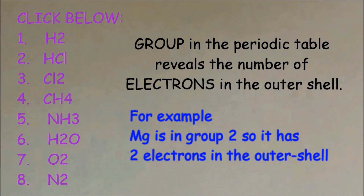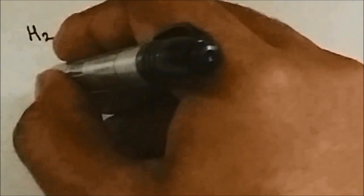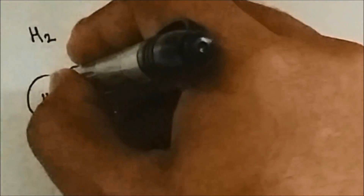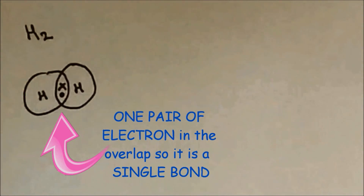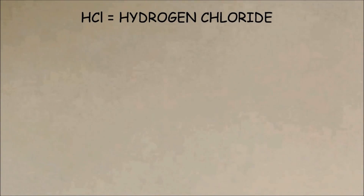The first molecule is hydrogen. If you look at hydrogen, it is found in group 1, which means it has one electron in the outer shell. One electron comes from one hydrogen and the other electron comes from the other hydrogen, so each hydrogen now has two electrons — a full outer shell. Since there is only one pair of electrons in the overlap, this is a single bond.